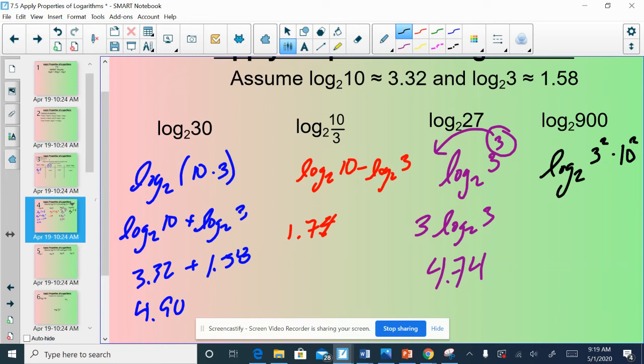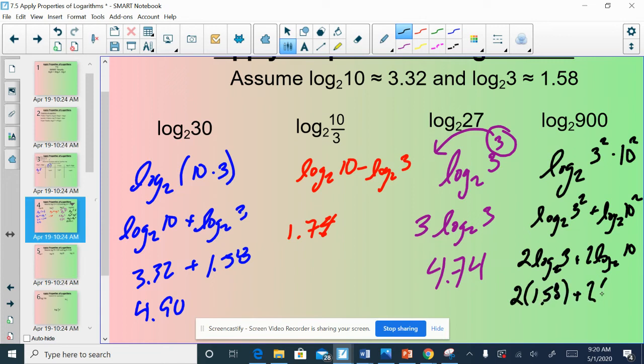Let's make sure we can do this properly. That multiplication, we can expand. We can turn that into log base 2 of 3 squared plus log base 2 of 10 squared. Now, both of the exponents could get written out front. 2 times log base 2 of 3 plus 2 times log base 2 of 10. I happen to know what log base 2 of 3 is. It's 1.58. 2 times 1.58 plus 2 times 3.32. And I can do that math real quick. That calculation, I get 9.8.